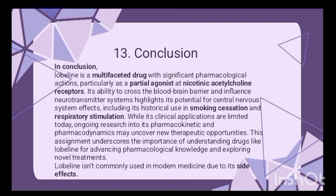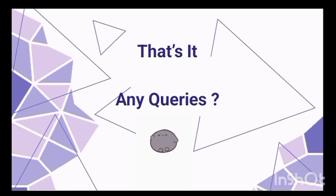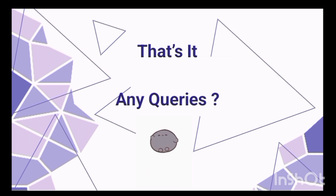In conclusion, Lobeline is a multifaceted drug that acts as a partial agonist at nicotinic acetylcholine receptors. It has been used as a smoking cessation aid and as a respiratory stimulant. However, Lobeline is not widely used today because of its side effects. Thank you so much — please ask if you have any queries.